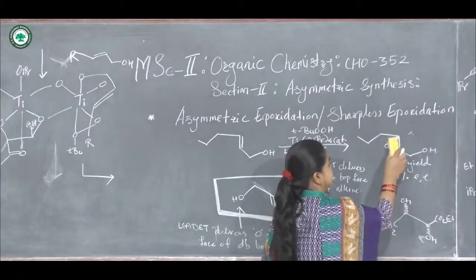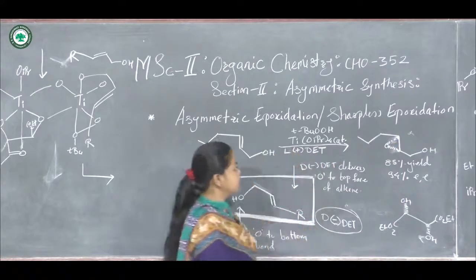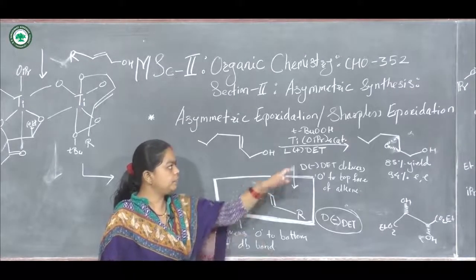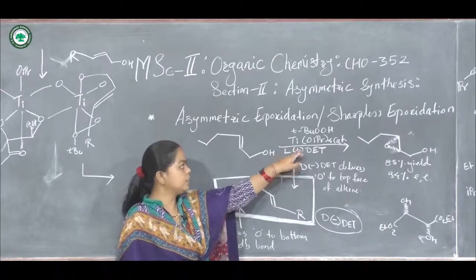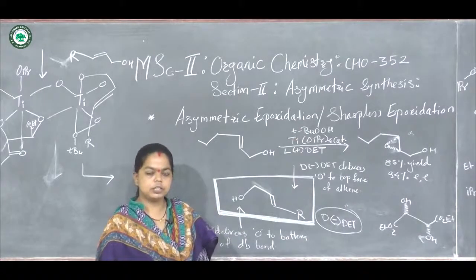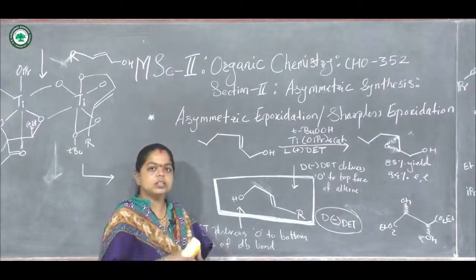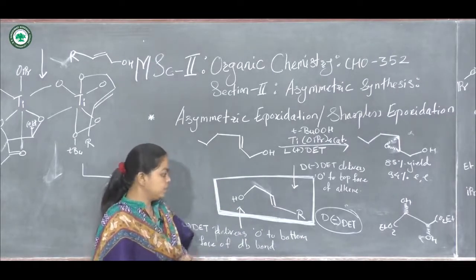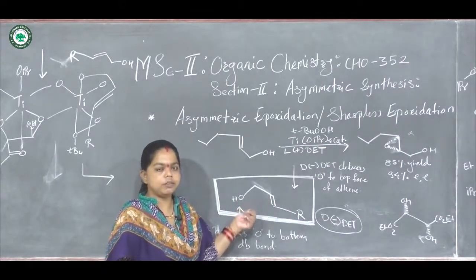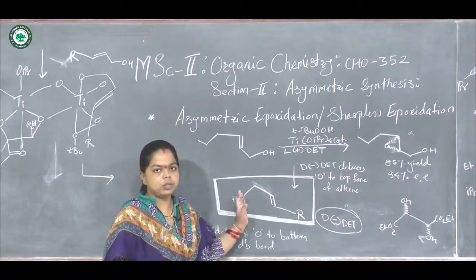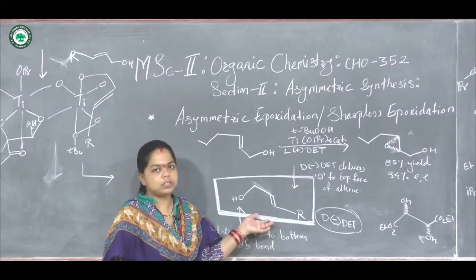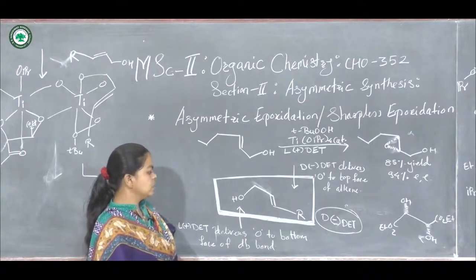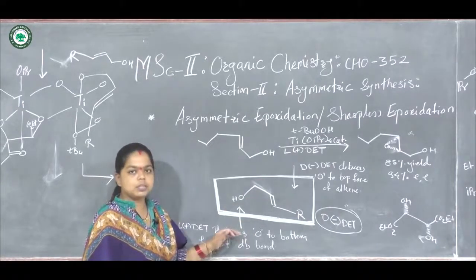Now let us see the mechanism for this reaction and how it actually works under oxidation conditions. We consider the titanium complex first — it contains four isopropyl groups. This reaction is possible only for allylic alcohols; if the OH group is not present and only a double bond or conjugated double bond is there, epoxidation is not possible. The basic substrate criterion is that the allylic alcohol must be present. We have shown the stereochemistry here and how the reaction works.